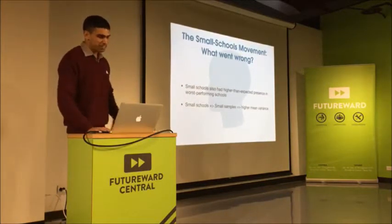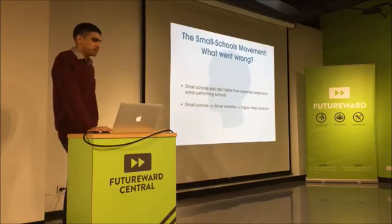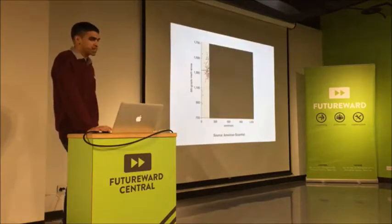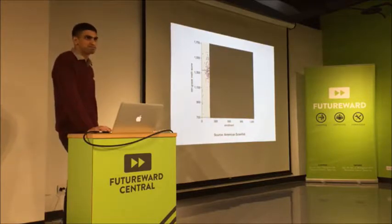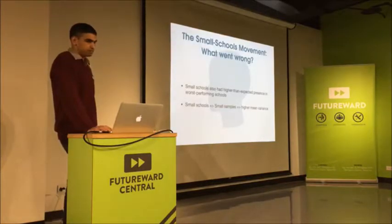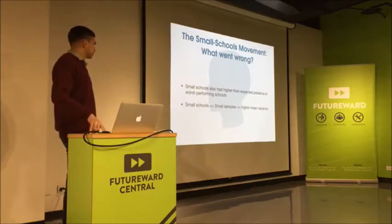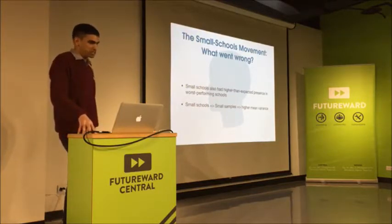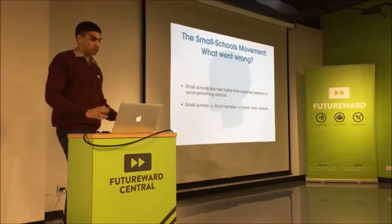Later on, they found out that big schools actually tend to have better performance, because big schools have more money and more facilities. This is one more example of: when you're dealing with data, you have to know how it works. Performance does not depend on the size of school — that's what the trend line shows — but people got it wrong when trying to make decisions from the data.